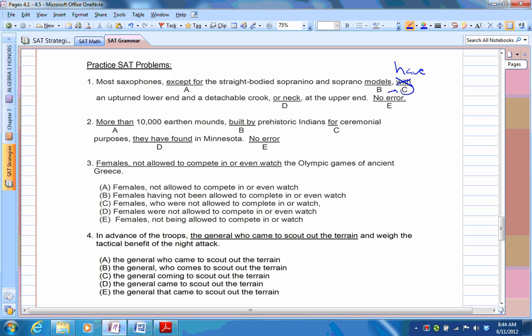Even though we expect these to be subject-verb disagreement, sorry, we expect these to be incomplete sentences, that's what I meant to say earlier, because it's in the category for incomplete sentences. But hopefully you'll get to the point where, when you see a whole bunch of different types of questions, you'll be able to identify what type of grammar rule is being tested here. So the next one, more than 10,000 earthen mounds built by prehistoric Indians for ceremonial purposes, they have found in Minnesota. Have been found in Minnesota. That would make it sound like a complete sentence. Three. Females, not allowed to compete in or even watch the Olympic games of ancient Greece. Probably need a verb. So I think D would work because you're talking about females, so it should be plural. Females were not allowed to compete in or even watch.